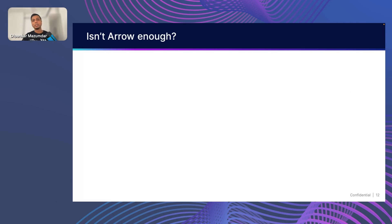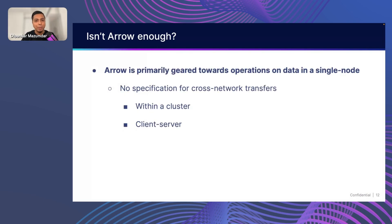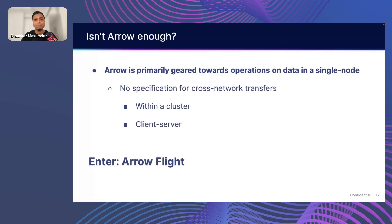Arrow is more for within a cluster — if you're doing things like shuffling — as well as for client-server transfer. That's really the problem Arrow Flight sets out to solve. It basically is a network transfer standard for Arrow-specific data. So now you have the Arrow format, and now you have the standard to transfer that data over the wire.